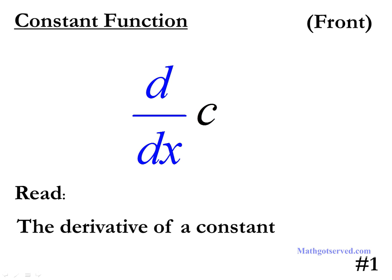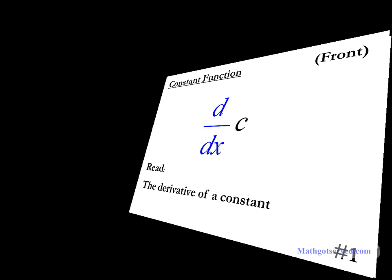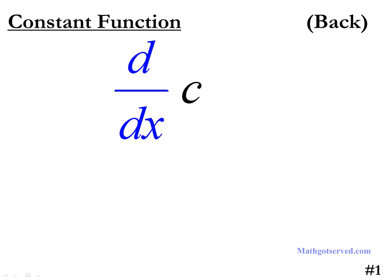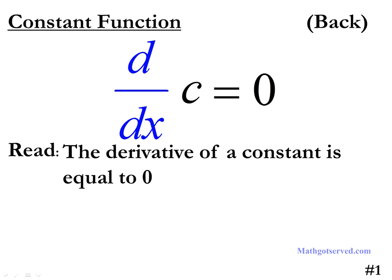Moving right along. The first formula we are going to deal with is the constant function. It says d/dx of c. D/dx is basically a notation for differentiation. The way you read this is: the derivative of a constant. So d/dx represents an operation — the differentiation process. The front of this card is asking you: the derivative d/dx of a constant c is what? The answer is on the reverse. So the derivative of a constant function c is equal to zero.